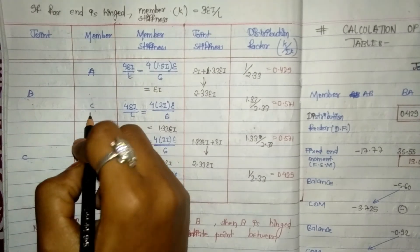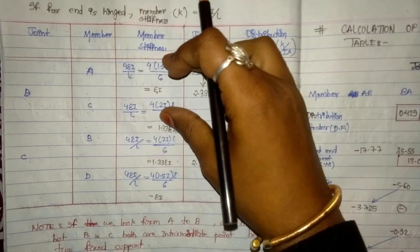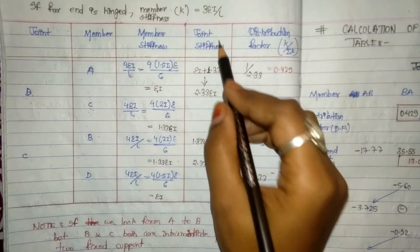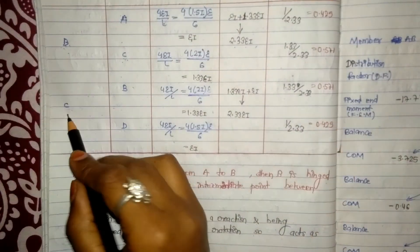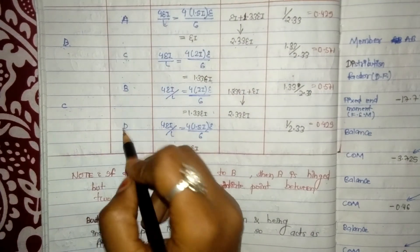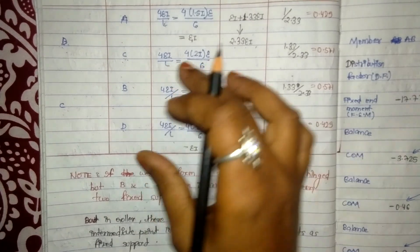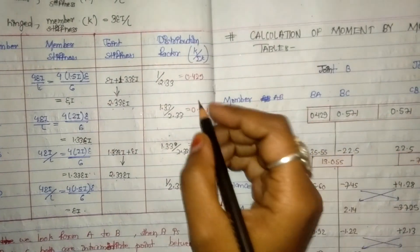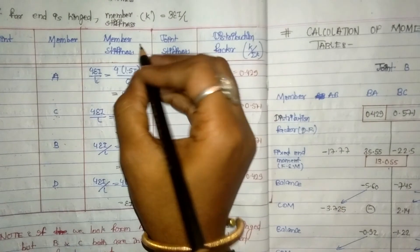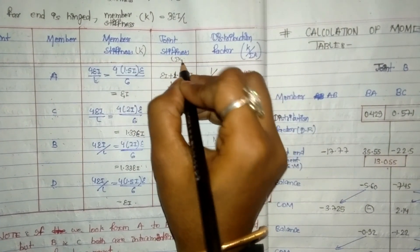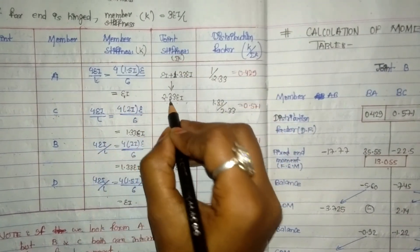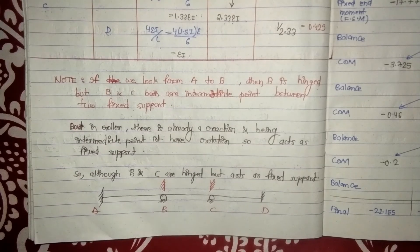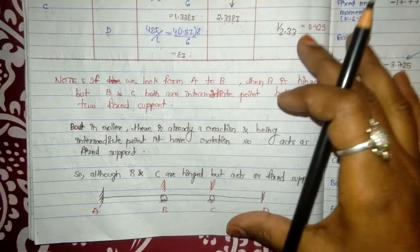Joint stiffness at B — members BA and BC have stiffness Ei and 1.33Ei respectively. Adding them gives joint stiffness at B = 2.33Ei. Similarly, joint stiffness at C — members CB and CD have stiffness 1.33Ei and Ei. Adding gives joint stiffness at C = 2.33Ei. Distribution factor = k / ΣK, so for member BA: Ei / 2.33Ei = 0.429, and for BC: 1.33Ei / 2.33Ei = 0.571.